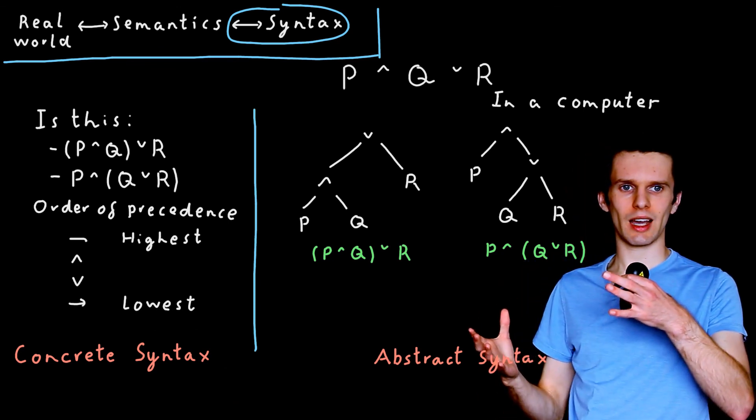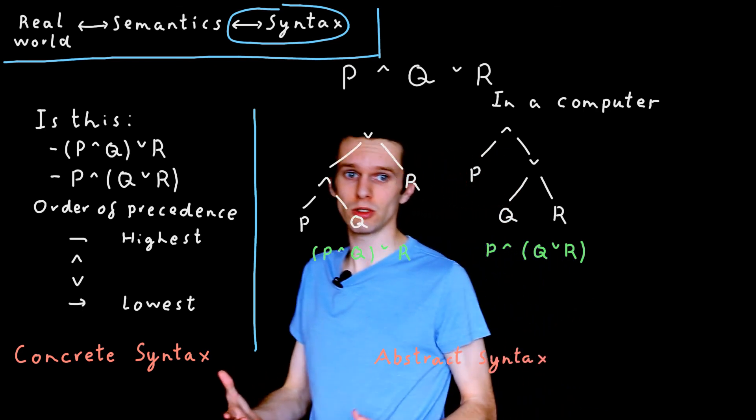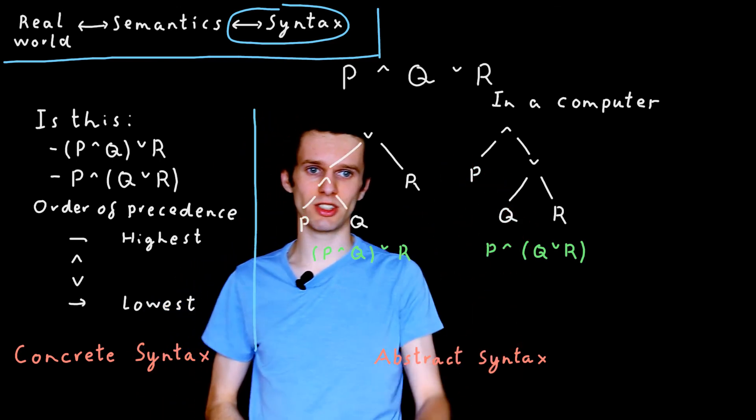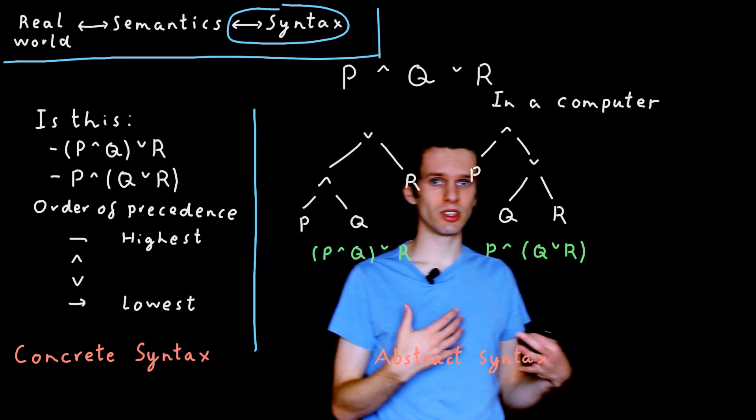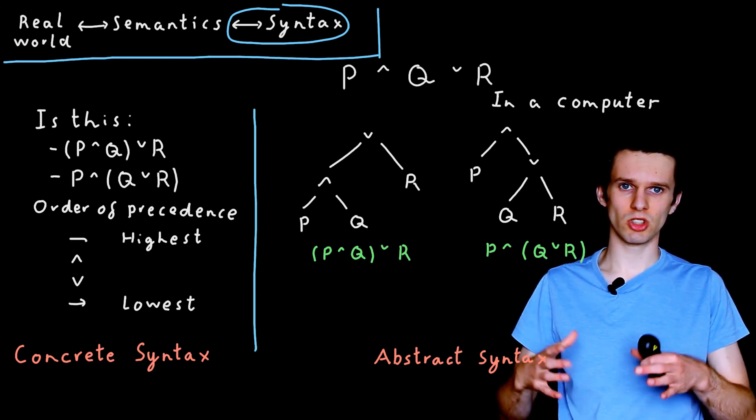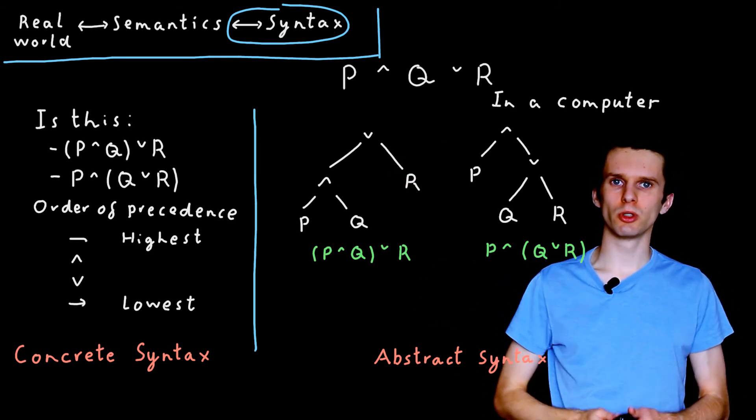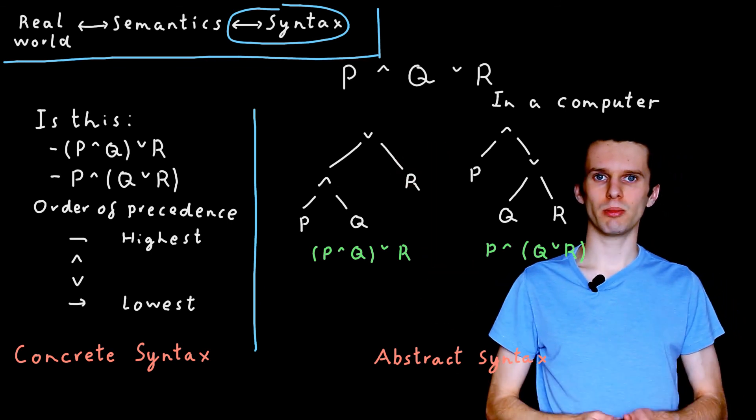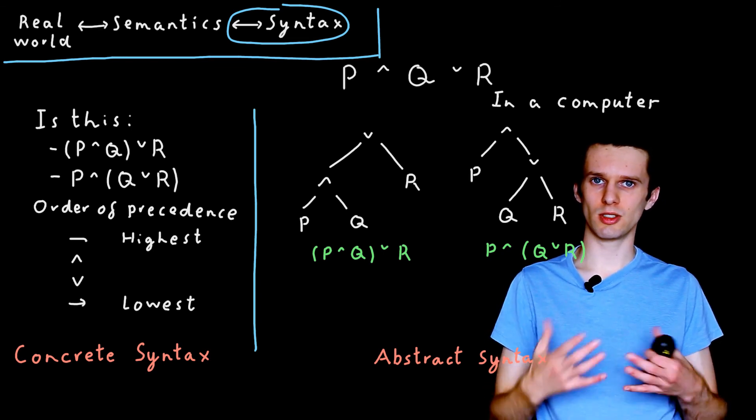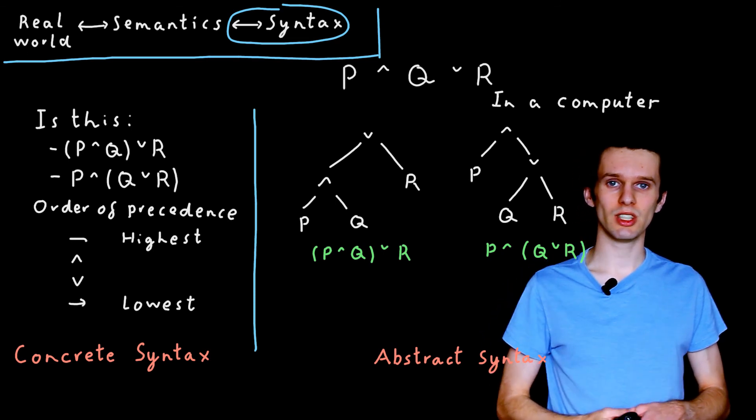And now we've seen how a syntax can be used to represent things about the real world, either in concrete syntax or as abstract syntax, and how a syntax relates to the real world via the semantics. The semantics gives meaning to these symbols we write down. We now want to be able to reason about them. And we do this using the deductive system, which is the third and final part of our logic, and which we will see in the next video.